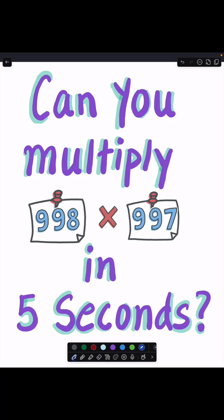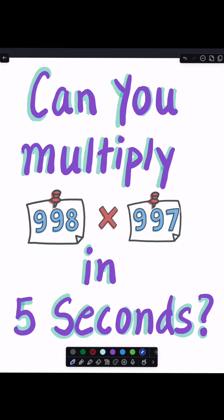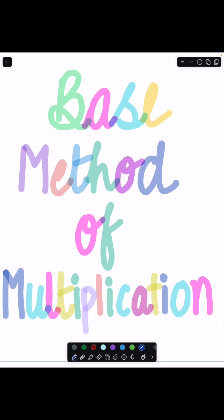Can you multiply 998 by 997 in 5 seconds? I'm about to show you the secret base method from Vedic mathematics that needs no calculators, just your brain.